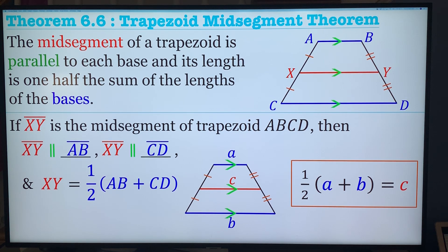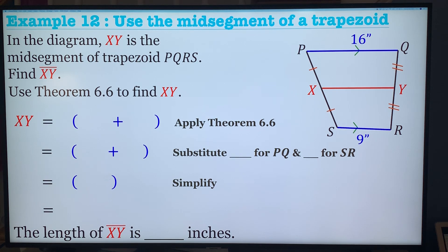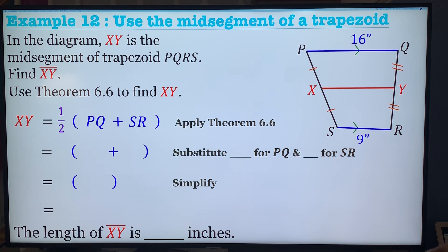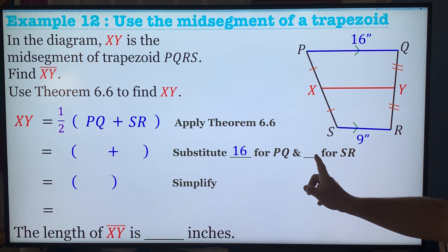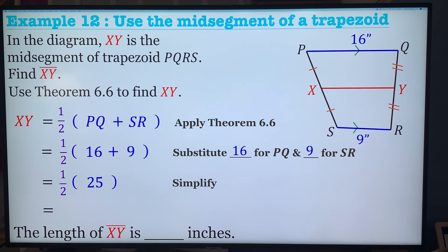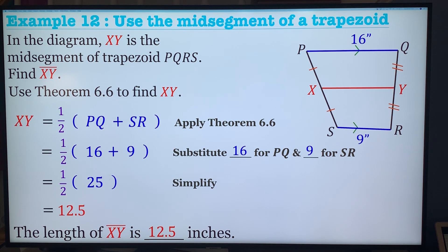Example 12: In the diagram, XY is the mid-segment of trapezoid PQRS. Find XY. XY equals one-half of PQ plus SR. We substitute 16 for PQ and 9 for SR: one-half of 16 plus 9 equals half of 25, which is 12.5. The length of XY is 12.5 inches.